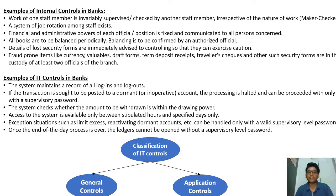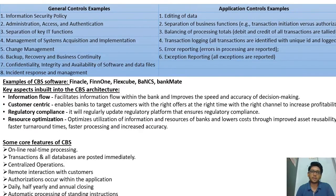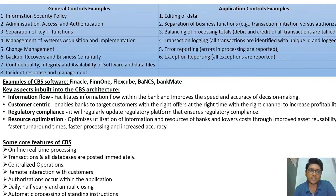IT controls are classified into two types: General Controls and Application Controls. Examples of general controls include: information security policy, administration access and authentication, separation of key IT functions, management of systems acquisition and implementation, change management, backup recovery and business continuity, confidentiality/integrity/availability of software and data files, and incident response and management.